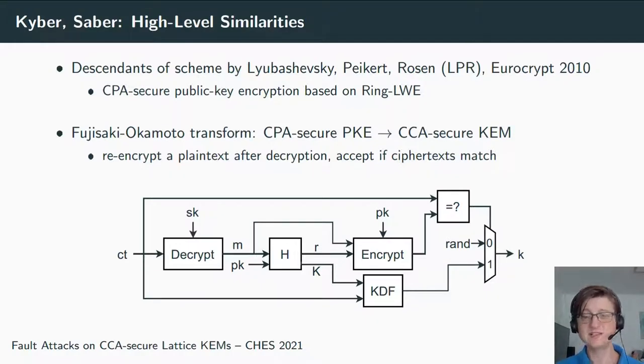This LPR scheme and its descendants are only CPA-secure. To get a CCA-secure key encapsulation mechanism, both Kyber and Saber employ some variant of the Fujisaki-Okamoto transform. What this transform essentially does is, during decapsulation, you take the ciphertext, decrypt the ciphertext to get some message m, then you re-encrypt the ciphertext using randomness that is deterministically derived.